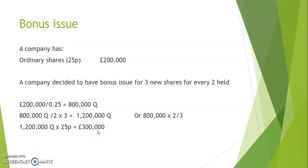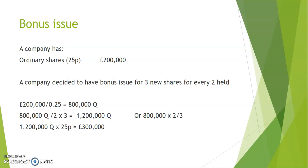In terms of value, 1.2 million new shares at 25p nominal value equals £300,000. This company already has £200,000 worth of shares in issue, so after the bonus issue they will have a further £300,000 on the books — giving a total of £500,000 worth of shares after the issue has been made.